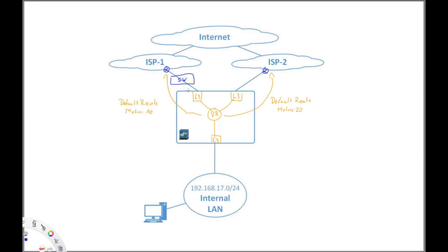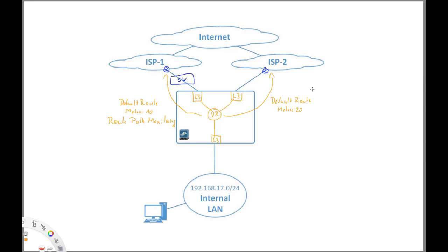A better approach is route path monitoring, a feature introduced in version 8. We can apply a monitoring profile to the route itself where we ping IP addresses on the internet from a specific source IP, such as the ISP interface. If those addresses become unreachable, a failure condition is triggered, the route is deactivated, and the secondary default route kicks in. For simple ISP failover, route path monitoring is the solution to go with — it's very simple and very effective.